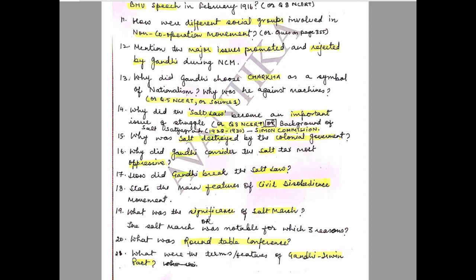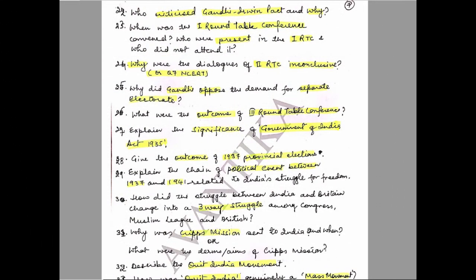Question 18: State the main features of the Civil Disobedience Movement. Question 19: What was the significance of the Salt March, or the Salt March was notable for which three reasons? Question 20: What was the Roundtable Conference? Question 21: What were the terms or features of the Gandhi-Irwin Pact?